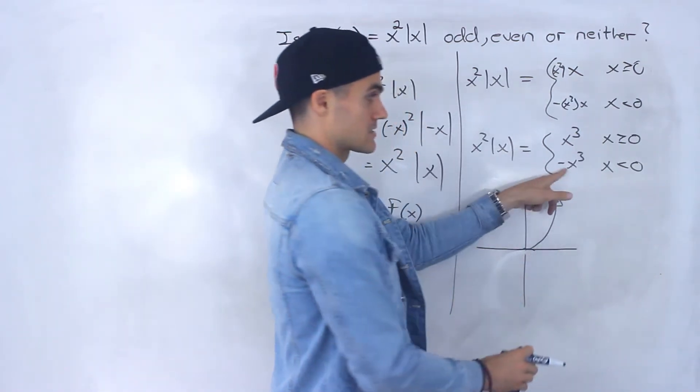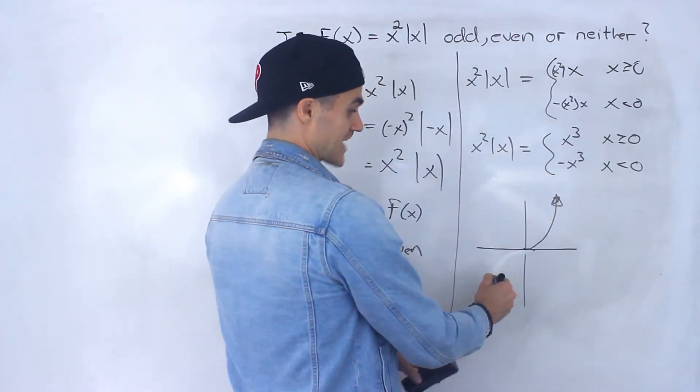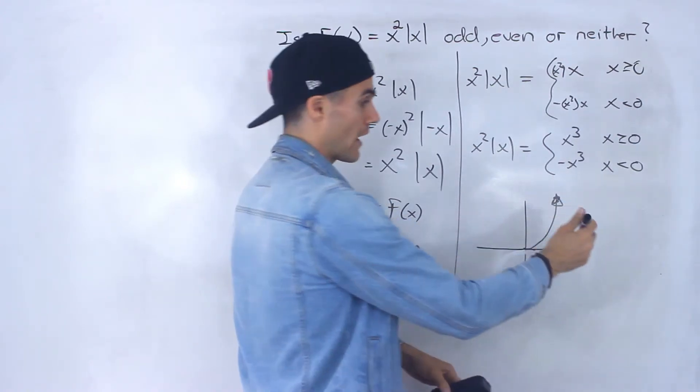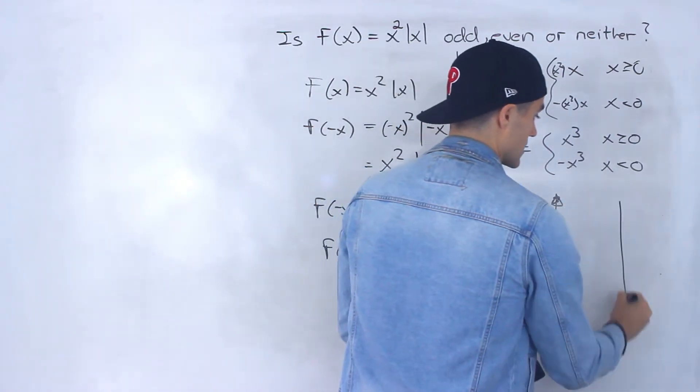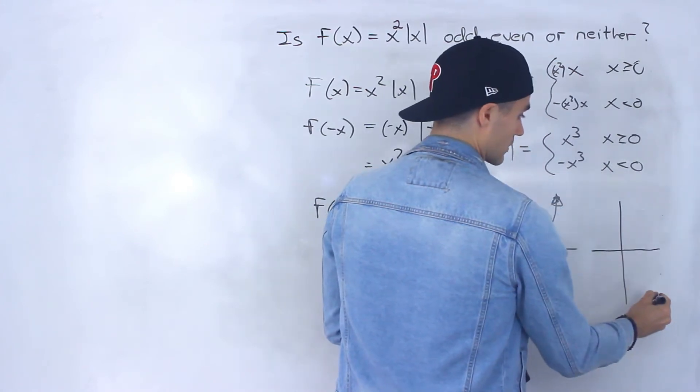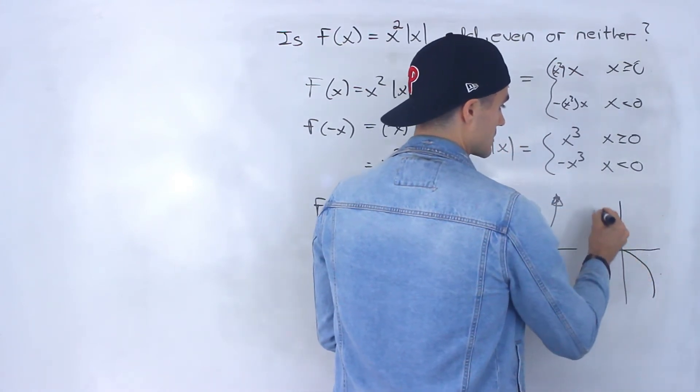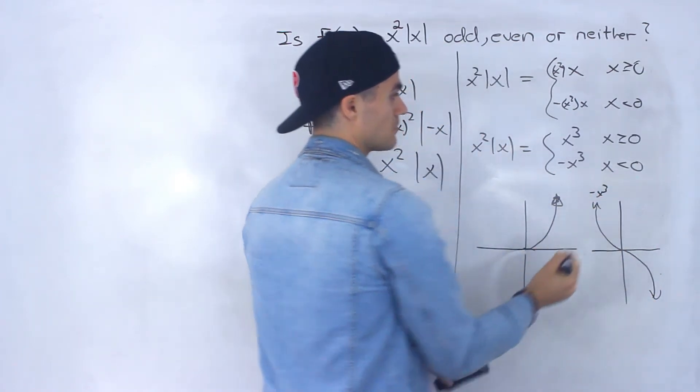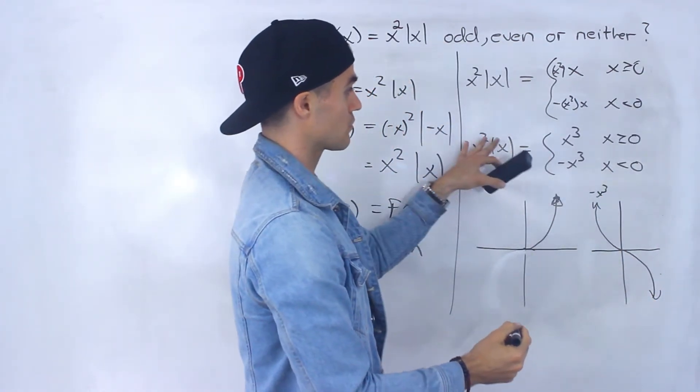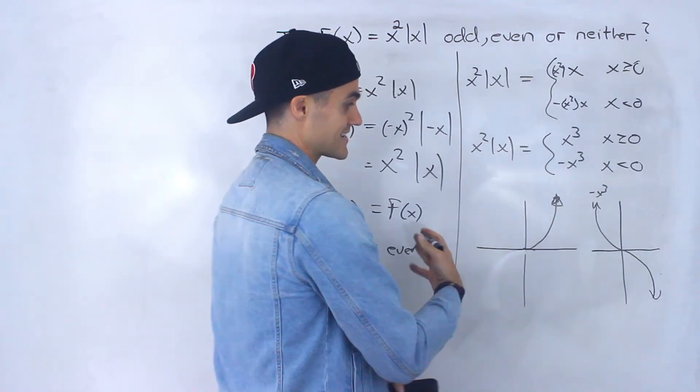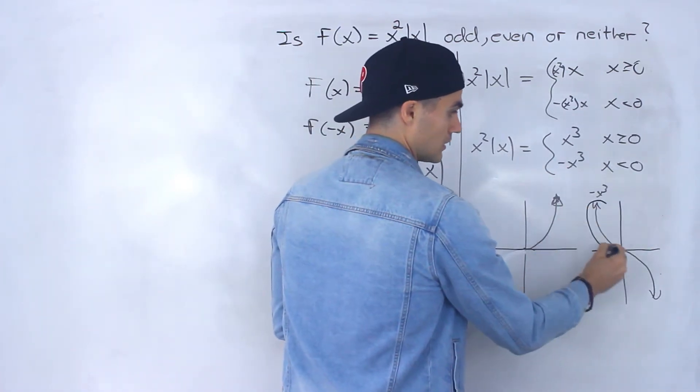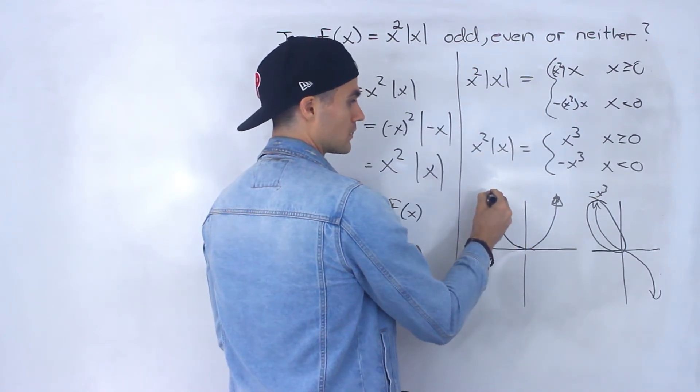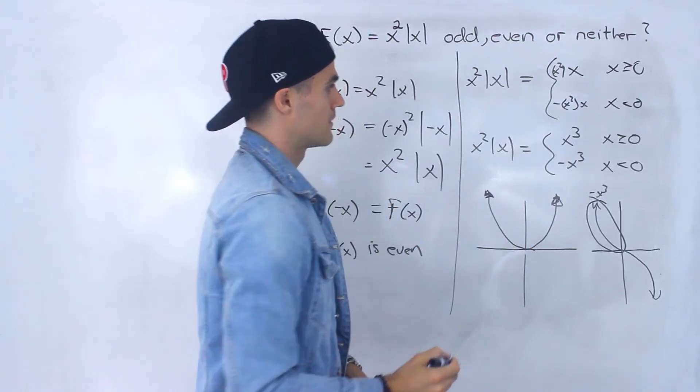Okay, now how does negative x to the power of three look like? Well, it's just x to the power of three reflected in the y-axis or in the x-axis. So the way that's going to look is it's going to be like this. This is negative x to the three, but notice it's only negative x to the three for this function when x is less than zero. So we would only look at that portion. And so that portion would go here.